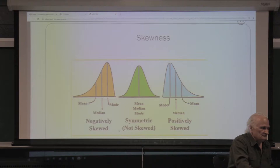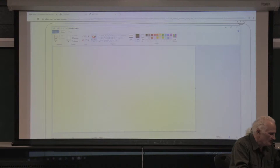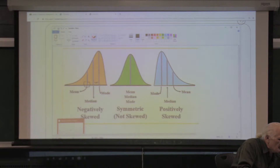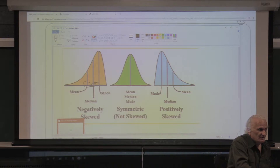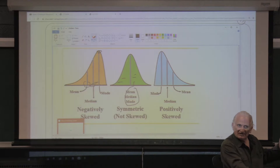If the data is skewed to the left, the mean will be pulled toward the direction of the skewness. When things are skewed to the left, the mean is to the left. The median is always between the mean and the mode. The mode is the most frequently occurring number — you draw a line from the top of the histogram down to the x-axis, and that's the mode. These three are the same when there is no skewness. When things are skewed to the right, the mean is greater than the median.